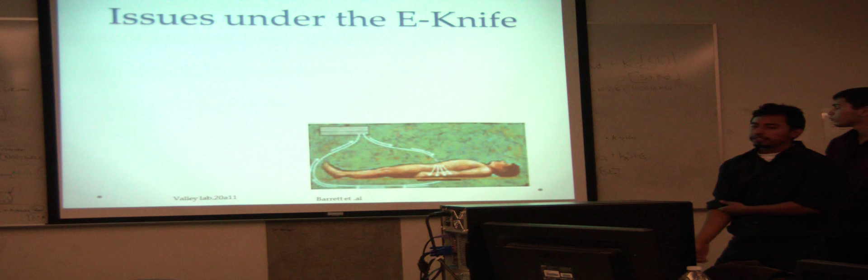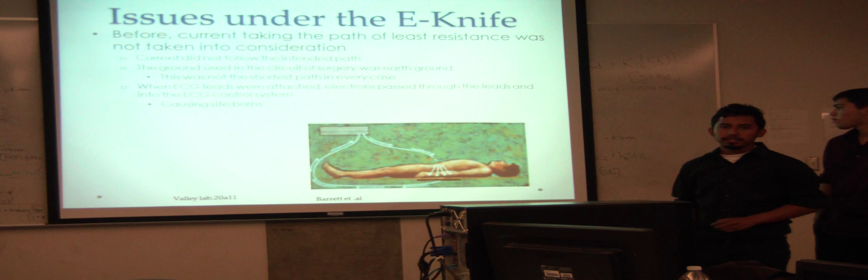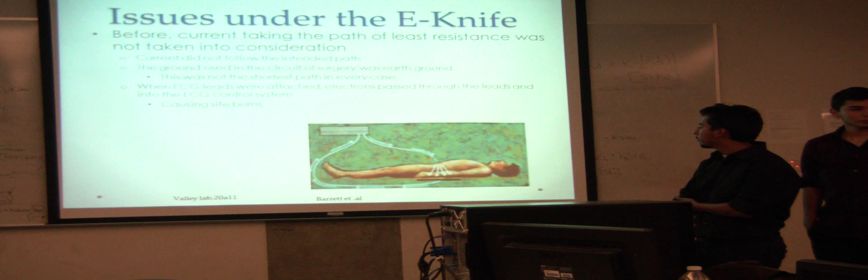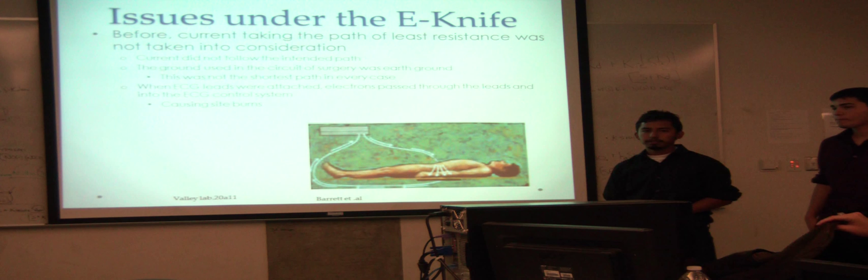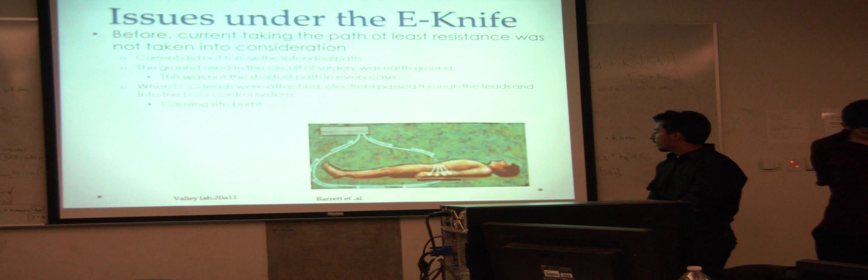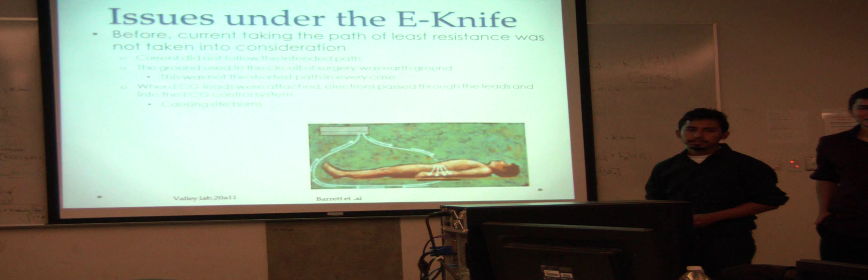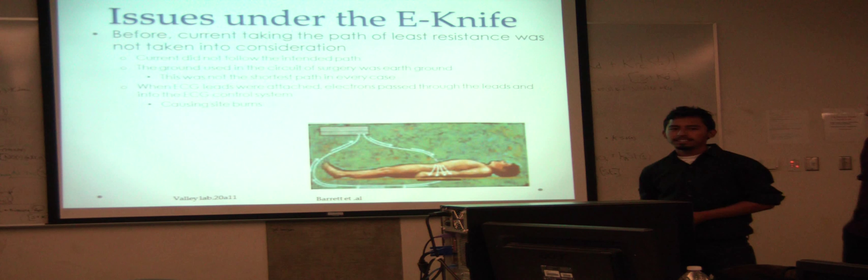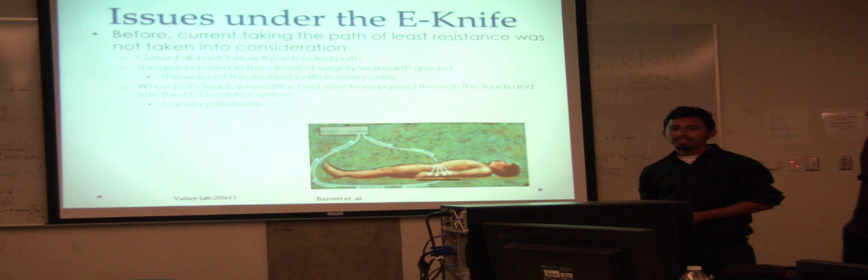Some of the issues under the e-knife would be that before, they didn't apply a ground to the actual system. What happened was when the person was going under surgery, they would just use what's known as earth ground. The patient would be under the active electrode and it would pass through the tissue and back to the ground where they were placed. This was supposed to be ideally the shortest path, the smallest resistant path. But this wasn't always the case because when they had ECG placed on them, that would cause a different route for the current to pass through and cause more current on the actual pads to come out of the body and go into the ECG. This would cause what's known as burns, as you can see there.